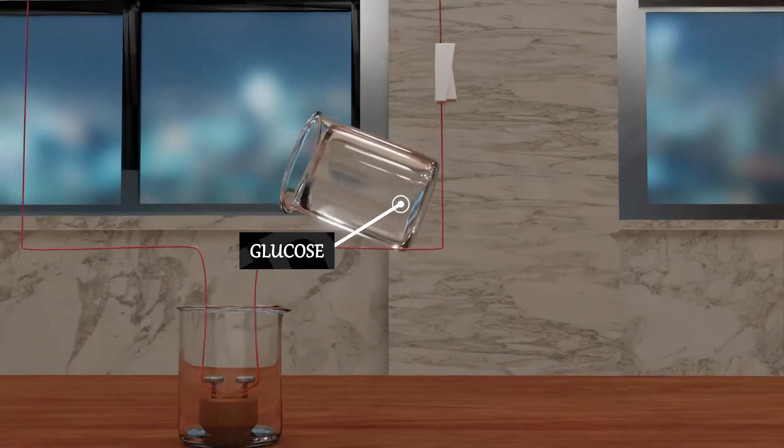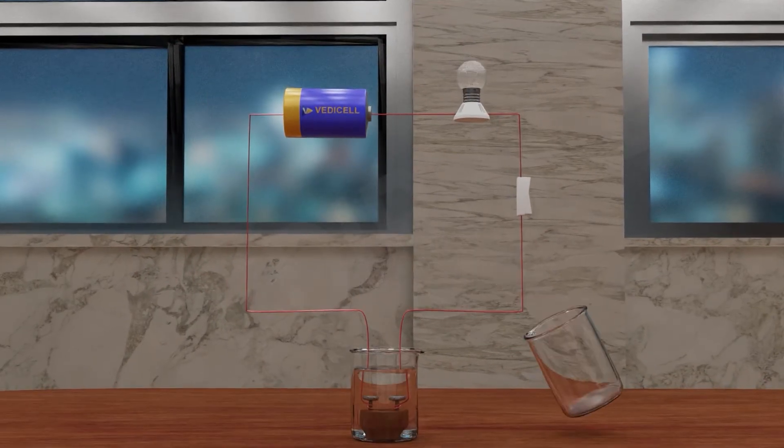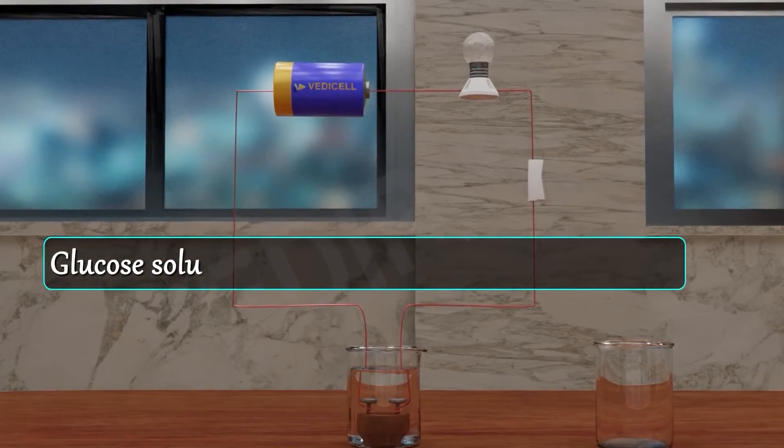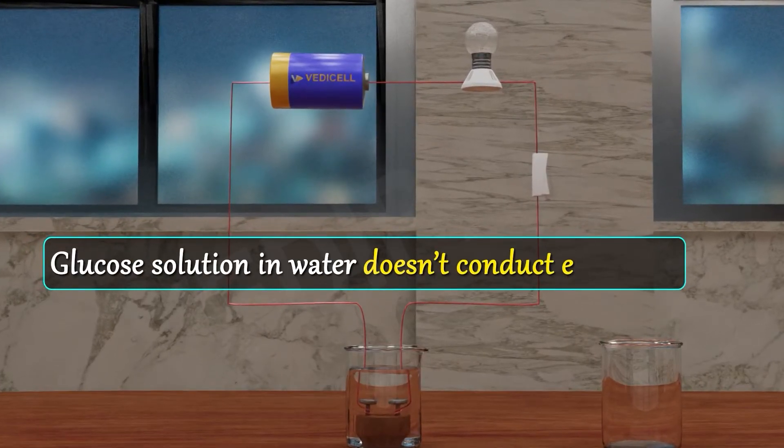Now, we are going to repeat the same experiment with glucose. Oh, the bulb is not glowing. That means glucose solution in water does not conduct electricity.